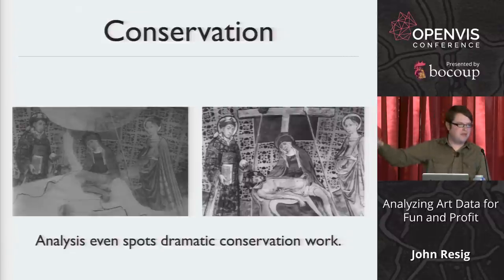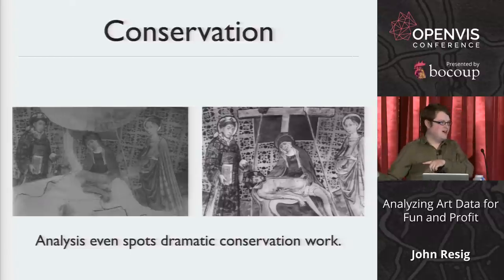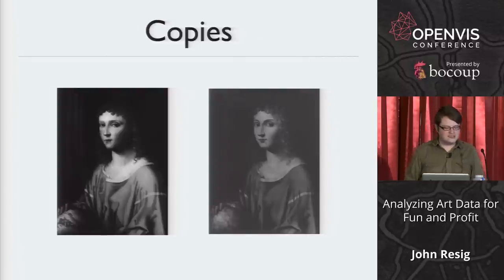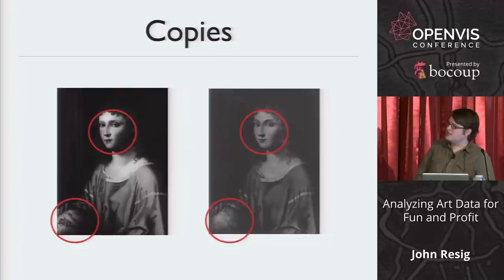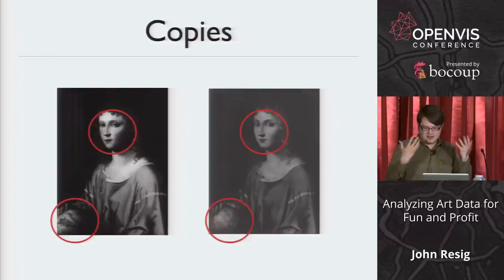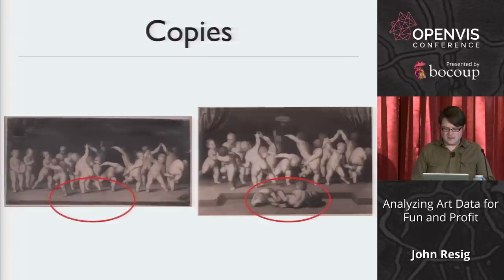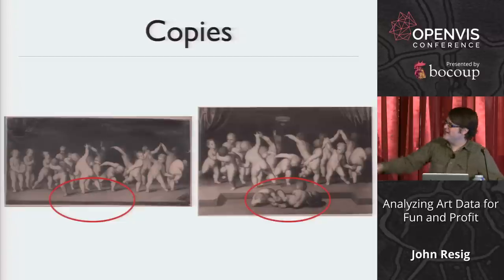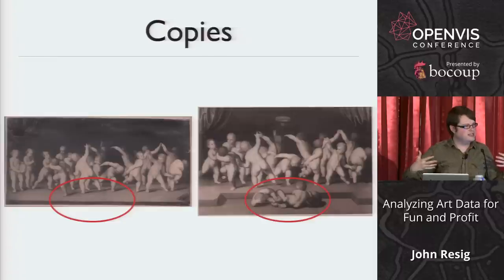The system is also good at spotting copies. For example, here are two paintings that look very similar but the faces and globes are slightly different — both are copies of a Da Vinci painting. And there are cases where two images are clearly inspired by each other — maybe frolicking babies — visually similar but with differences. That's a really interesting thing for scholars to dig into.